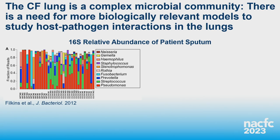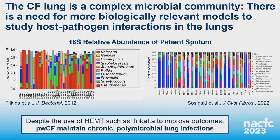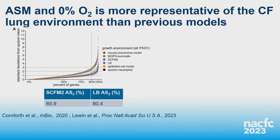The CF lung is a complex microbial community requiring more biologically relevant models to study host pathogen interactions. 16S rRNA sequencing data demonstrates the great diversity of microbes colonizing the CF lung. Data from 2012 predates the use of HEMTs, but a more recent study demonstrates that these complex communities aren't lost with Trikafta treatment — despite improved outcomes, people with CF maintain chronic polymicrobial lung infections.